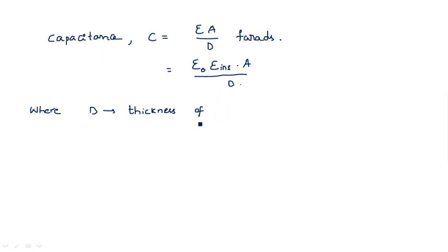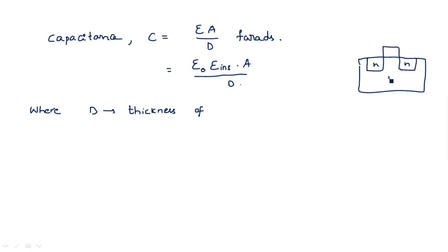For MOS transistors, we are using the dielectric material as oxide. If you take a MOS transistor, you have n, n, and a p-substrate; this is the polysilicon, and here it is the oxide layer. The oxide layer has a thickness that is d. The polysilicon and the p-type substrate are acting as two conducting layers separated by the oxide layer, forming capacitance action at the gate — that's why it is gate capacitance CG.